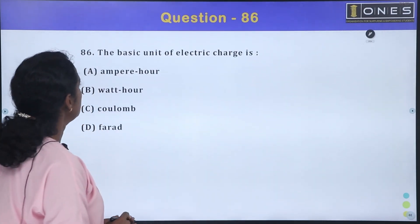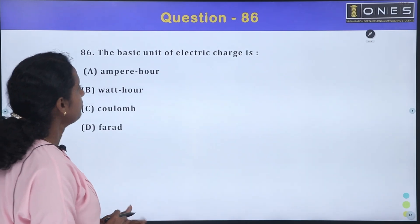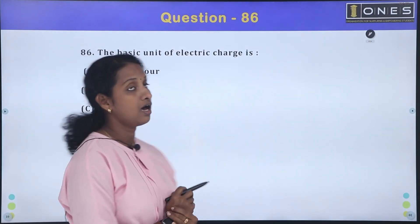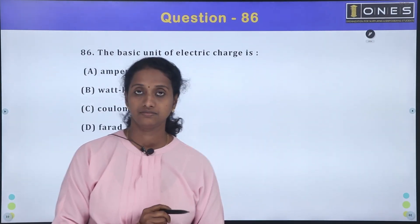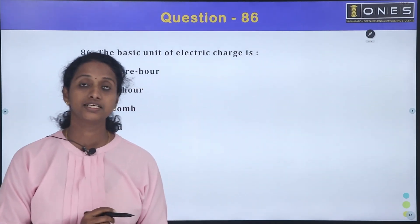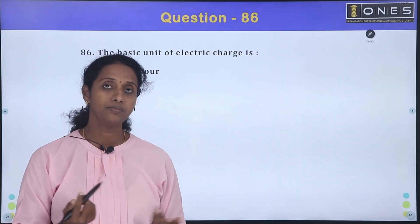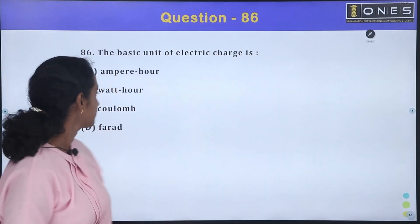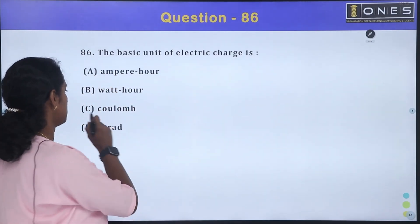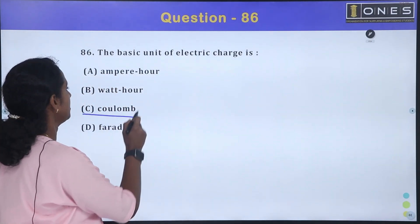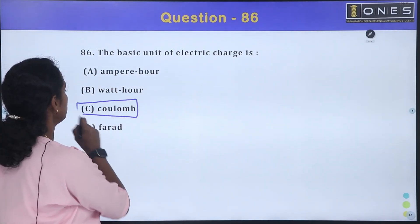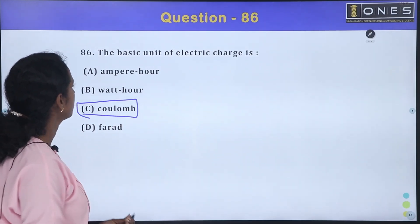The basic unit of electric charge is the Coulomb. Option C — Coulombs — is the correct answer.